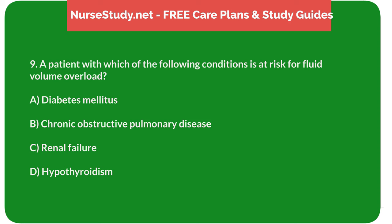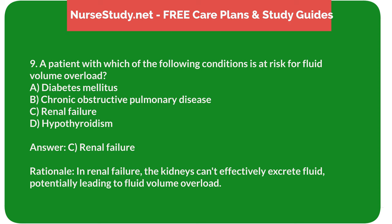Question 9: A patient with which of the following conditions is at risk for fluid volume overload? A. Diabetes mellitus. B. Chronic obstructive pulmonary disease. C. Renal failure. D. Hypothyroidism. Answer: C. Renal failure. Rationale: In renal failure, the kidneys can't effectively excrete fluid, potentially leading to fluid volume overload.